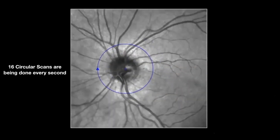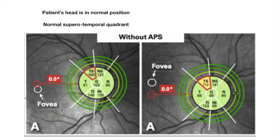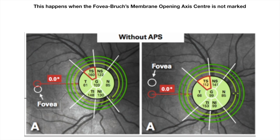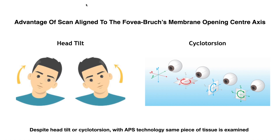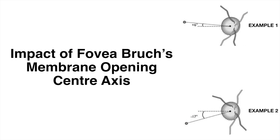16 circular scans are performed every second, and every circle must match the optic nerve head, automatically correcting for eye movement. Without APS, the patient's superior temporal quadrant of the ONH appears normal in normal head position but appears thinned if the head is tilted. With APS technology, the fovea-BMO axis is plotted, compensating for head tilt and cyclotorsion, so the superior temporal quadrant remains the same regardless of head tilt.